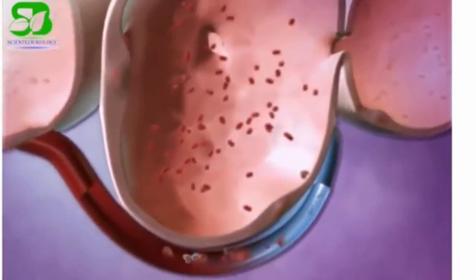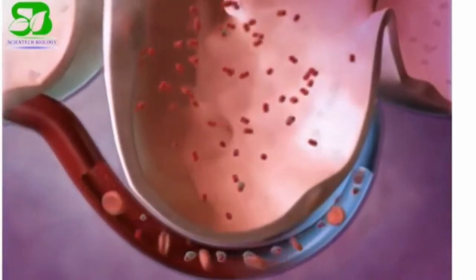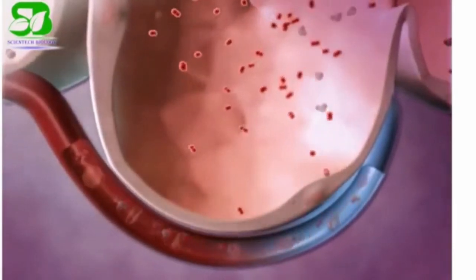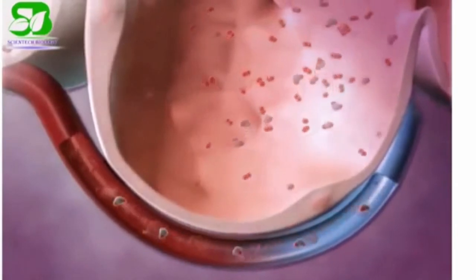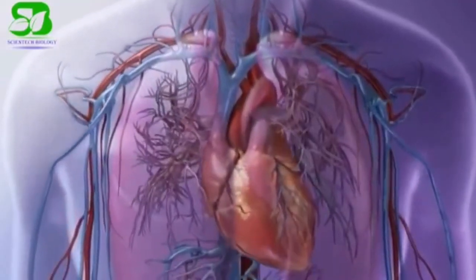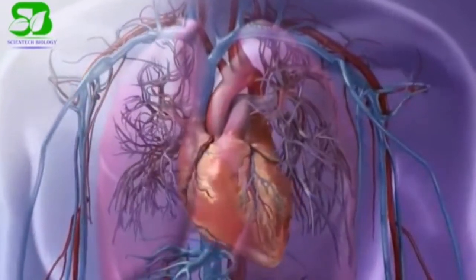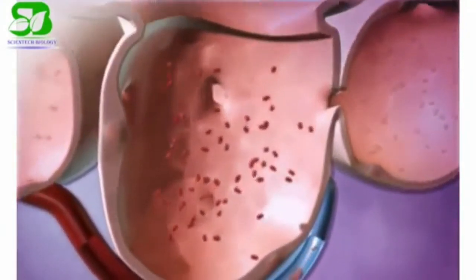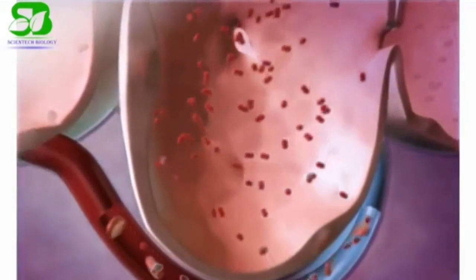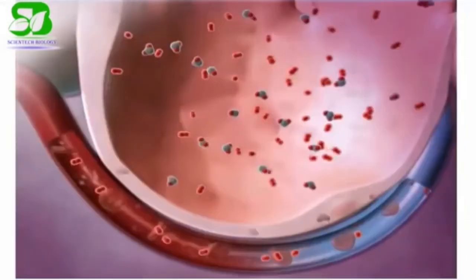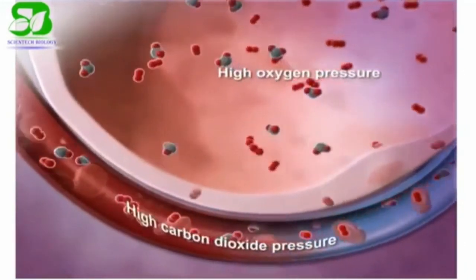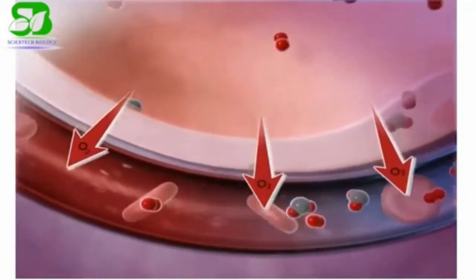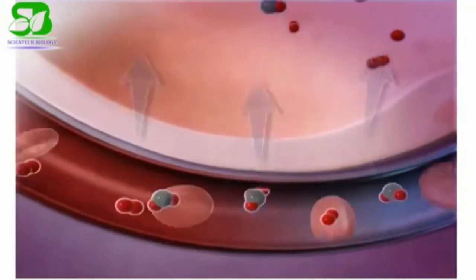The alveolus receives oxygen and is surrounded by blood capillaries. Oxygenated blood is produced here. CO2 and oxygen exchange occurs at the alveolus — oxygen passes from the alveolus into the blood capillaries, producing oxygenated blood, while carbon dioxide moves in the opposite direction.